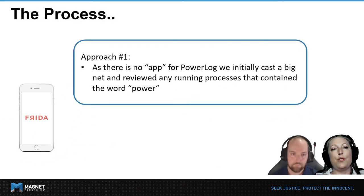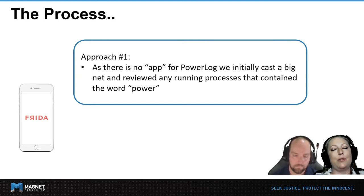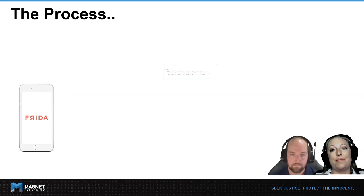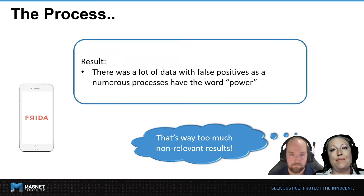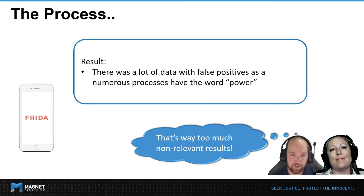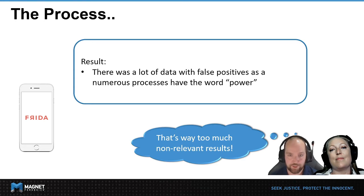For our first approach, since there is no application for Powerlog, we initially cast a wide net using Frida and reviewed any processes that were running that contained the word 'power.' The result was that there was a lot of data with false positives, as numerous processes did have the word power. Sometimes you get lucky with this approach, but in this case there were just too many.